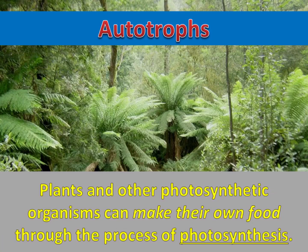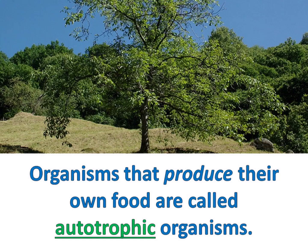Plants and other photosynthetic organisms can make their own food through the process of photosynthesis. Organisms that produce their own food are called autotrophic organisms. The prefix auto means self and trof is a root for nutrition, so autotrophic organisms make nutrition for themselves.